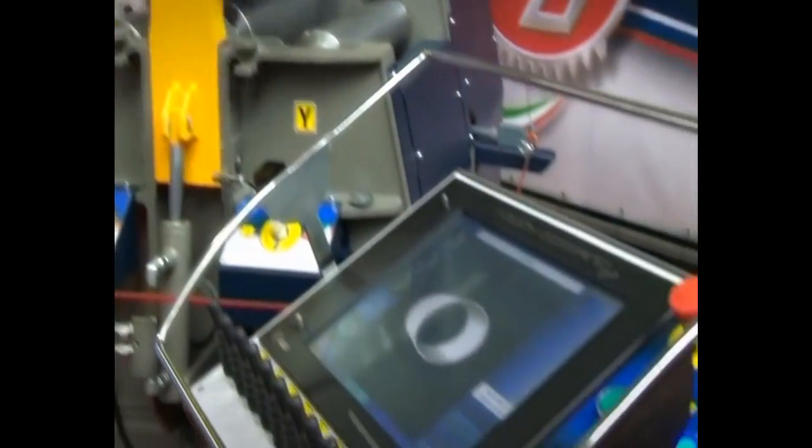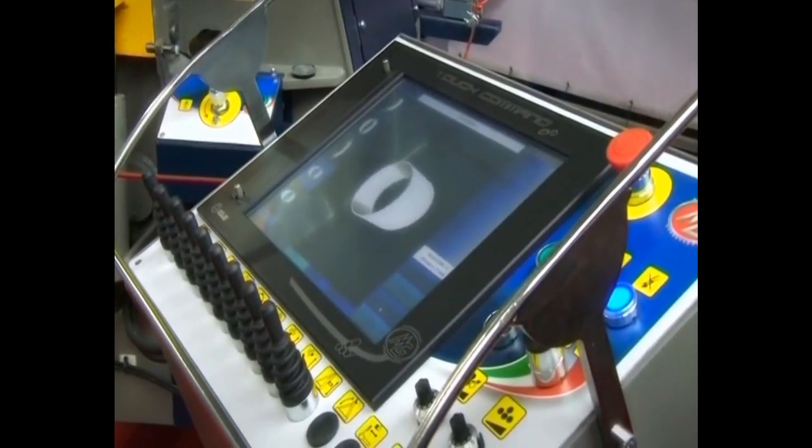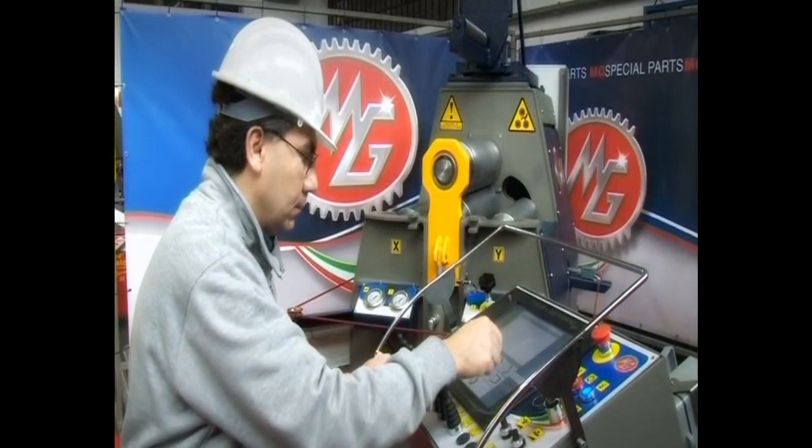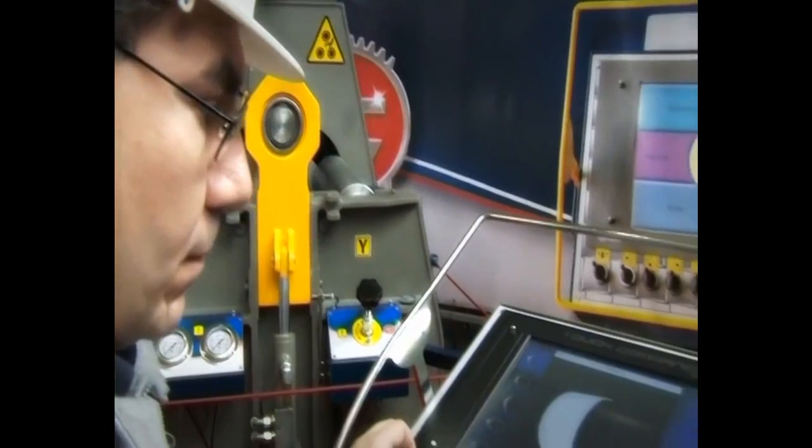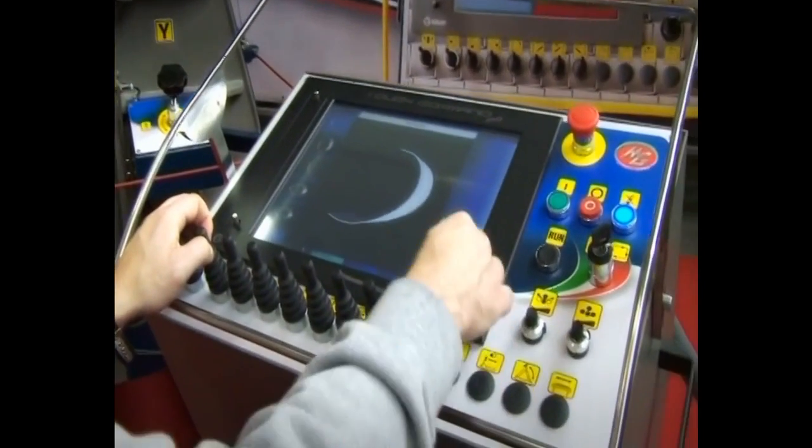It's divided into three main stages: input of the plate data, input of the shape drawing manually or by DXF import, and generation of the sequence of movements and their execution.